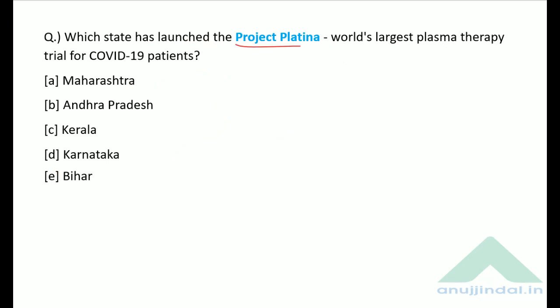Which state launched Project Platinum — the world's largest plasma therapy trial for COVID-19 patients? Since Maharashtra has the highest number of COVID-19 cases in India, the Government of Maharashtra started Project Platinum, which is the world's largest plasma therapy trial.